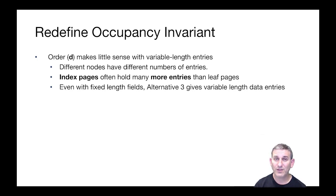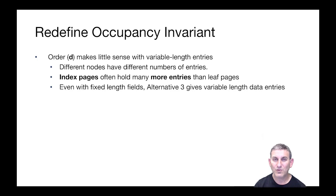This is also true even with fixed length fields because of alternative three. Remember, at alternative three, the leaf level is key comma list of matching record IDs. Some keys are popular and they'll have a long list of matching record IDs, and most keys are unpopular and will have a short list of matching keys. So these list entries at the leaf level are going to be variable length, even if our keys are fixed length.